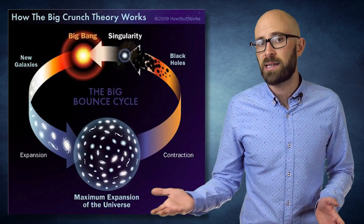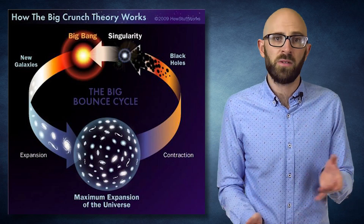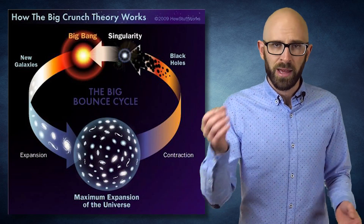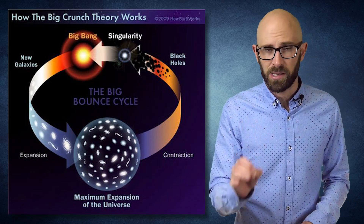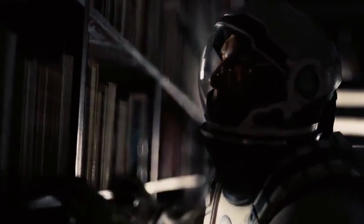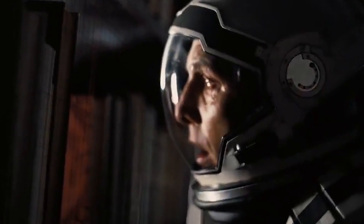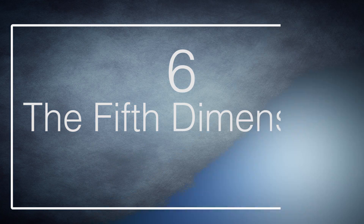And the same is true of anything: a tree from seed to decay, a city through all the eras, a universe from big bang to big crunch. In the fourth dimension, objects are complete in terms of time and space. So as a fourth dimensional being, you'd be able to see everything that ever took place in a room, and everything that ever will. In the movie Interstellar, that's pretty much how Cooper sees his daughter's bedroom while inside the tesseract, itself a four-dimensional hypercube.